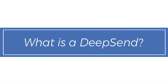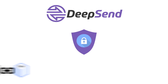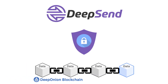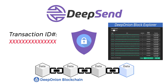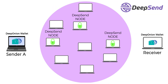What is DeepSend? DeepSend is a privacy feature of the DeepOnion blockchain. DeepSend hides the transaction traces. It protects people's privacy by making it virtually impossible to trace a transaction based on the public information of the blockchain. The sender's wallet connects to online DeepSend nodes so they can perform the payment instead.